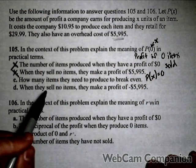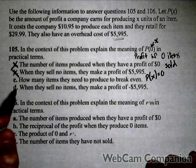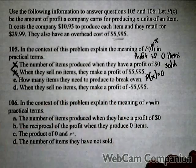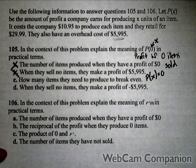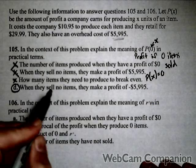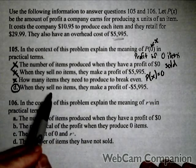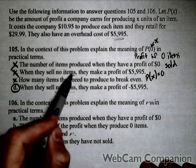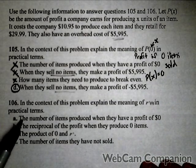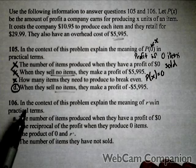When they sell no items, they make a profit of negative $5,995. Because they had an overhead cost of $5,995, if they sell no items, they're automatically going to lose that money. The two big things: sell no items, and they're going to lose their overhead cost if they don't produce and sell any items.